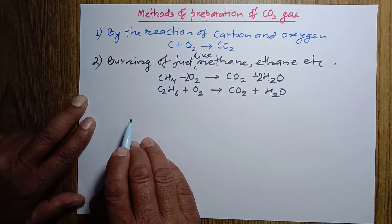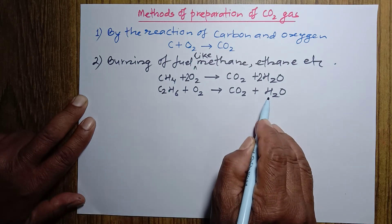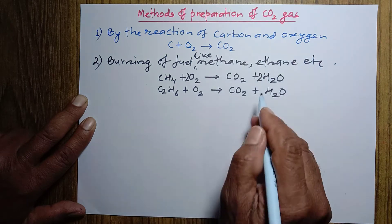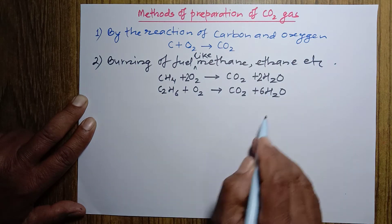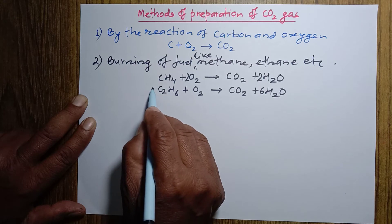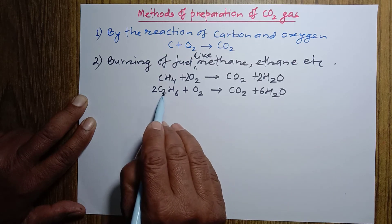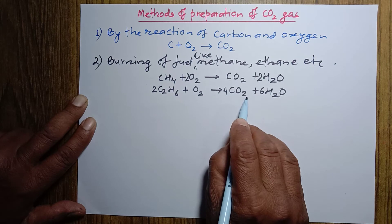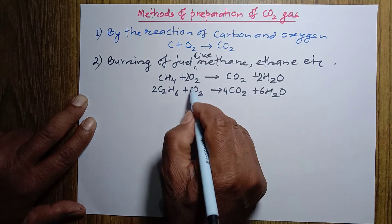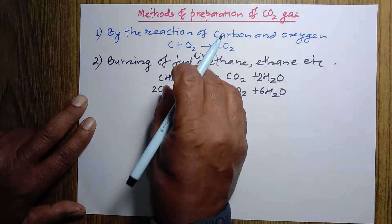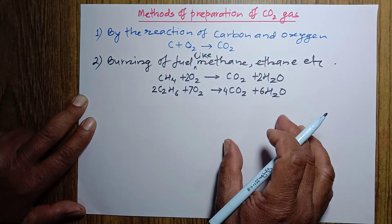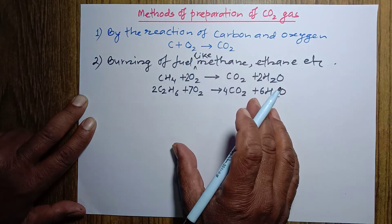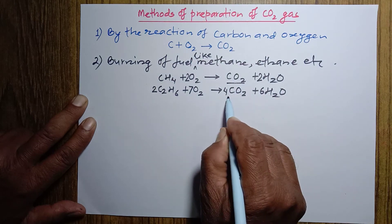Now how to balance this equation? Here hydrogen is 6, so if we take 3 here an odd number comes, so it is better to take 6, giving 12. If we take 2 here, then 6 gives 12. Now carbon is 4, so we take 4 here — carbon is balanced. For oxygen: 4 gives 8, plus 6 gives 14, so we take 7 to get 14. This way we can balance both reactions representing the reaction of fuel with oxygen — when fuel burns it reacts with oxygen to form carbon dioxide gas.